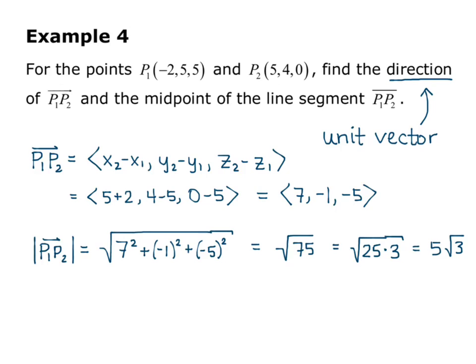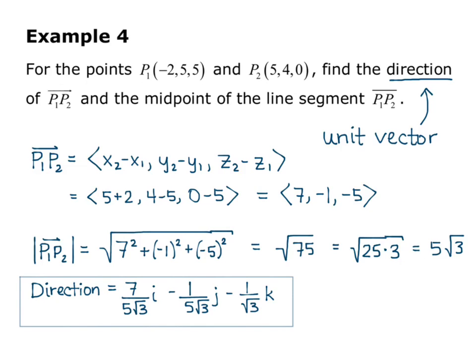And remember to make the vector a unit vector, I just divide each component by the length. So my direction vector is 7 divided by 5 square root of 3 i, minus 1 over 5 square root of 3 j, minus 1 over square root of 3 k. And notice that I simplified the k component because I know negative 5 over 5 would cancel and give me a 1 in the numerator. So there's my direction vector.